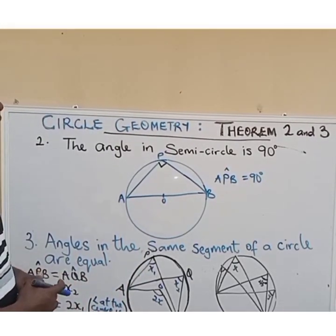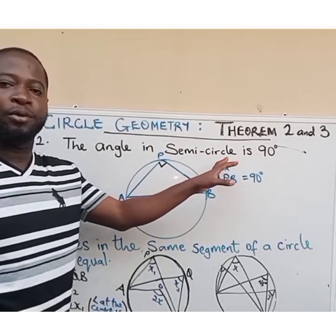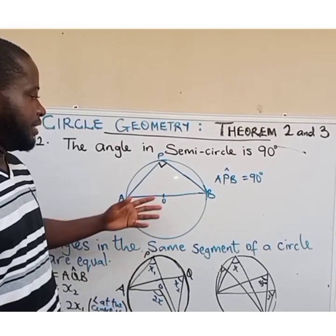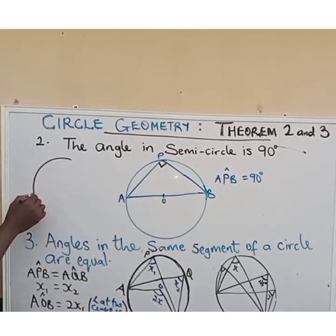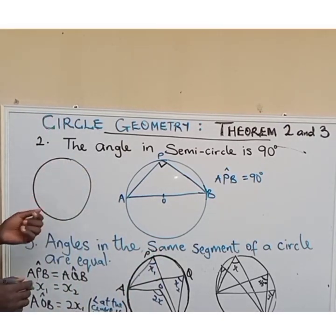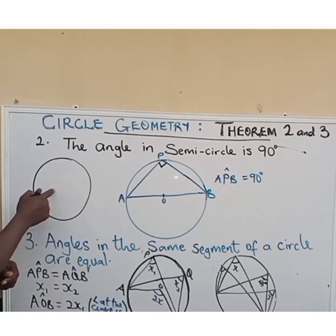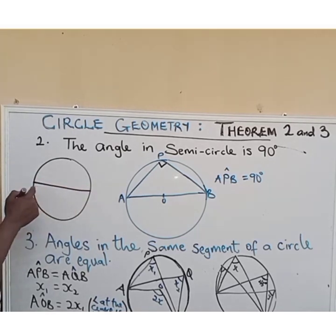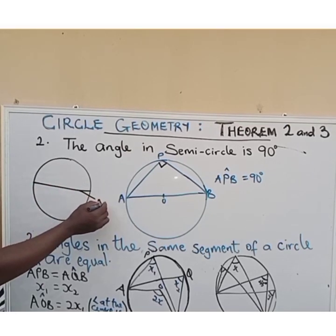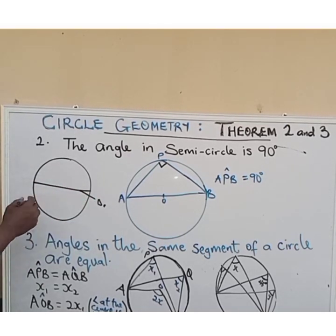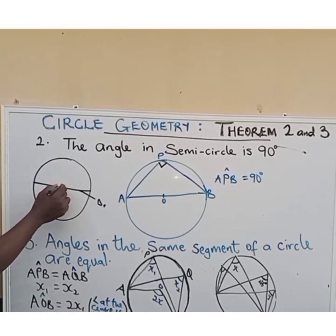Theorem 2 says: the angle in a semicircle is 90 degrees. What do we mean by that? This is our circle. The line that passes through the center of the circle and divides it into two is the diameter. This is the diameter, and this is the circumference, and we have our center.